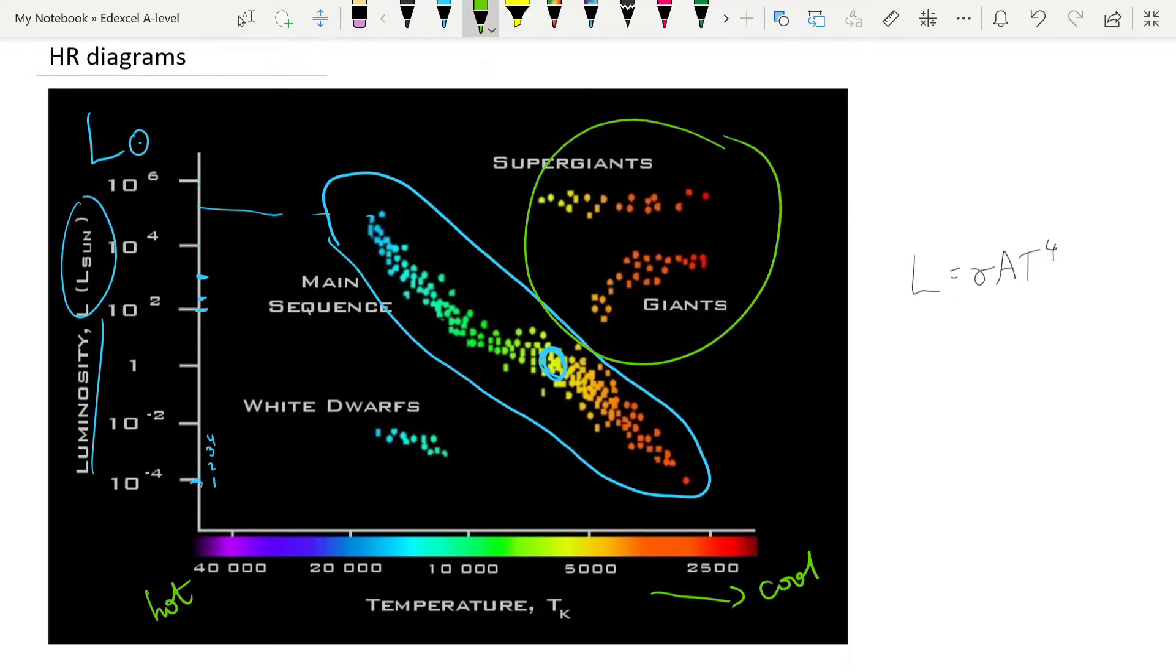The same but converse idea is for the dwarfs down here. You can see they have very high temperatures, but very low luminosity. And remember temperature is to the power of four, which means that even though they have those high temperatures, the total luminosity is very low. Which means they must be very, very small, and hence the name dwarf.